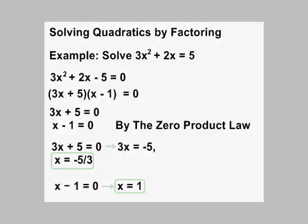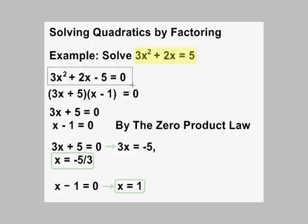In this equation, we solve a quadratic by factoring. We're going to solve the equation 3x squared plus 2x equals 5. You're tempted to just factor that right away — factor the x out — but no. Before you factor, you have to move all terms to one side. We do that by subtracting 5 from both sides, and that gives us 3x squared plus 2x minus 5 equals 0.